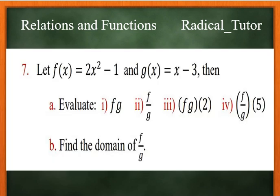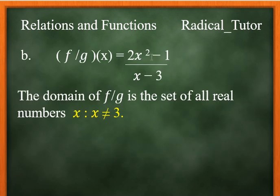Find the domain of f over g. We have 2x squared minus 1 over x minus 3. The denominator cannot equal zero, so x minus 3 cannot equal zero. Therefore, the domain of f over g is the set of all real numbers except 3.